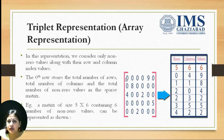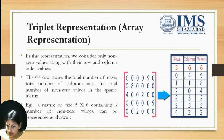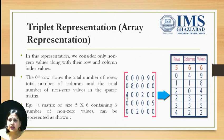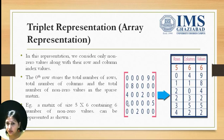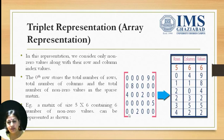For example, the first non-zero value is in row 0, column 4, and the value is 9. Next is row 1, column 1, value is 8. Next is row 2, column 0, value is 4. The next non-zero value is also in row 2, column 3, and the value is 2. Next is row 3, column 5, and the value is 5. And the last value is in row 4, column 2, and the value is 2.